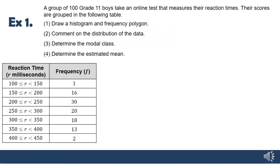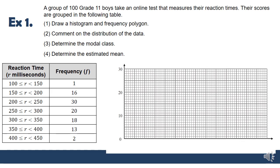Let's take a look at an example. A group of 100 grade 11 boys take an online test that measures their reaction times. Their scores are grouped in the following table. Now you guys know that reaction times are really important in a lot of different ways. So in sports, for example, if you have a faster reaction time than your opponent, it could mean the difference between winning and losing. In driving, for example, if a taxi swerves into your lane, the faster your reaction time, the more likely you are to take evasive action. So reaction times are really important.